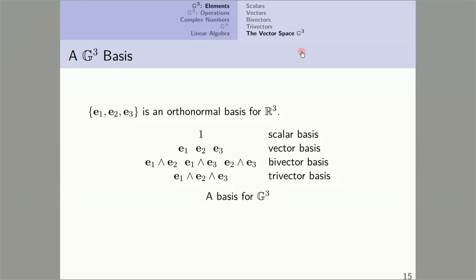A G3 basis. The vector space G3 has lots of bases, just like the vector space R3 has lots of bases. But if we start with an orthonormal basis for R3, then one can construct a canonical basis for G3. It looks like this. First, the scalar 1 forms a basis for the scalars in G3. Any scalar can be obtained by multiplying 1 by that scalar. The three vectors E1, E2, E3 form a basis for the vectors in G3.